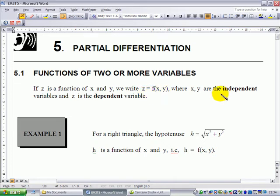In this case, x and y are called independent variables and z is called the dependent variable. Let's look at an example.